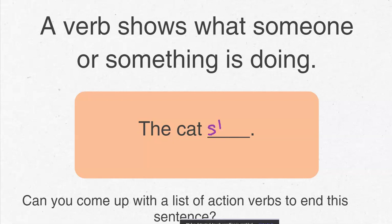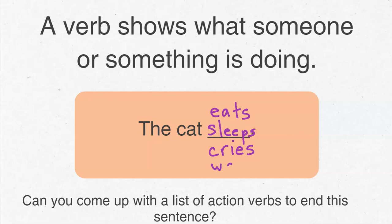Alright, let's see. The cat sleeps — kind of funny, but that is something that we do. The cat eats. But if you didn't feed the cat, maybe the cat cries. Also something that all cats do: the cat walks. These are all examples of verbs that complete the sentence and describe the action the cat is doing.